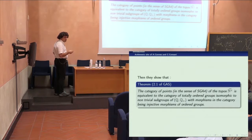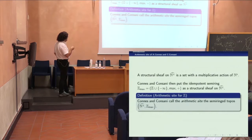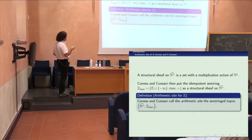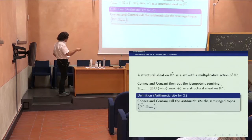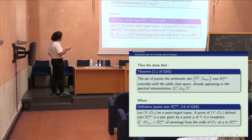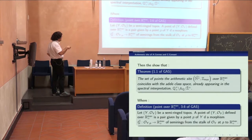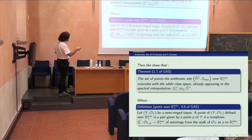They computed the points of this pre-sheaf topos and found it is the category of totally ordered groups isomorphic to non-trivial subgroups of Q+, with morphisms such that the positive elements are sent into Q+. They then placed a structural sheaf on this pre-sheaf topos — the semi-ring Z_max, integers with the max law and addition — and showed that the points of this topos over R_max+ correspond to the adele class space, which appears in the spectral interpretation of the zeros of the Riemann zeta function.